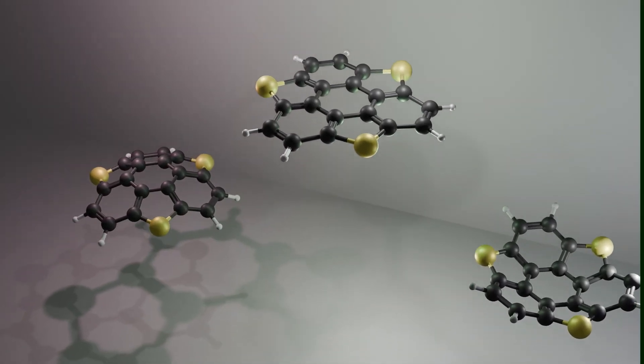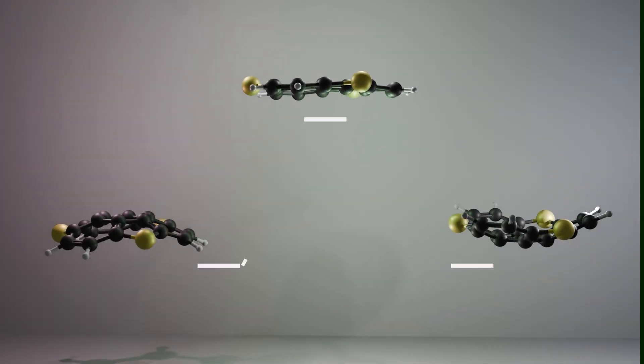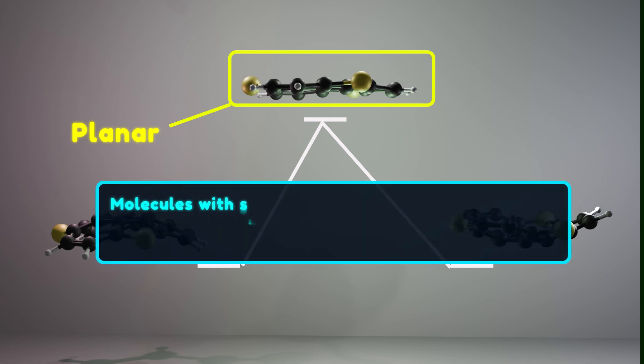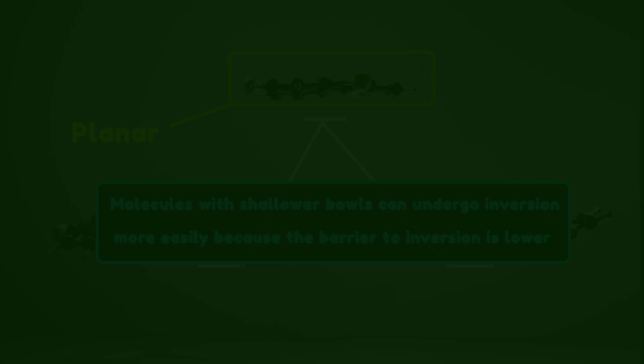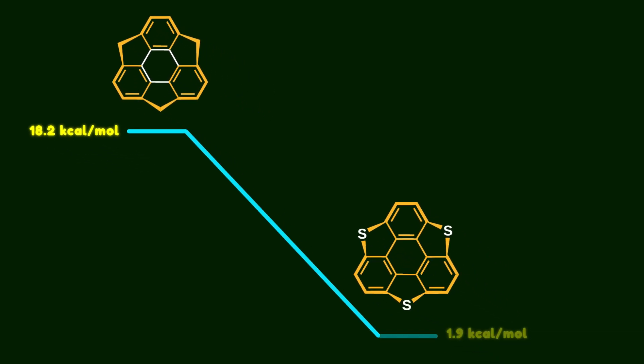But why does the bowl depth matter? During bowl-to-bowl inversion, the molecule must pass through a nearly planar structure before flipping to the opposite direction. The planar geometry is a transition state of the inversion process. Molecules with shallower bowls can undergo inversion more easily, because the barrier to inversion is lower. In fact, the inversion barrier decreases from 18.2 in sumanene to only 1.9 in trithiasumanene. This dramatic reduction in energy barrier is the origin of the ferroelectric response in trithiasumanene.